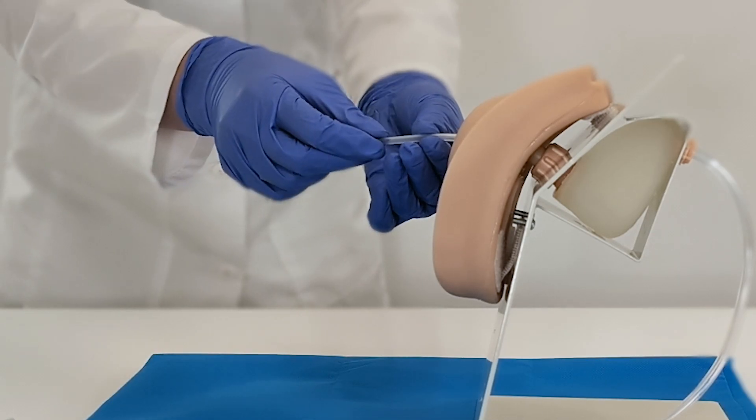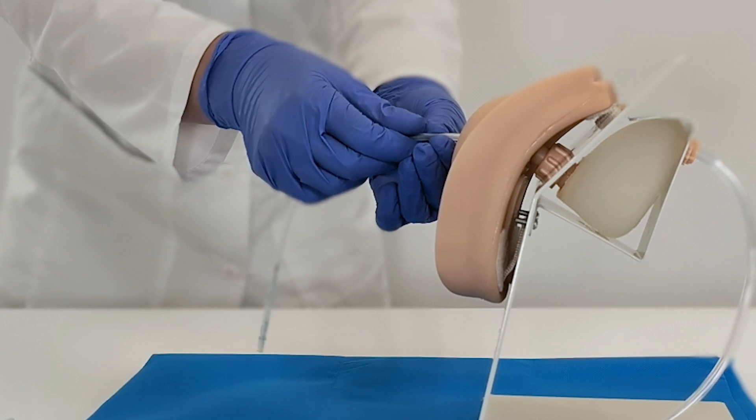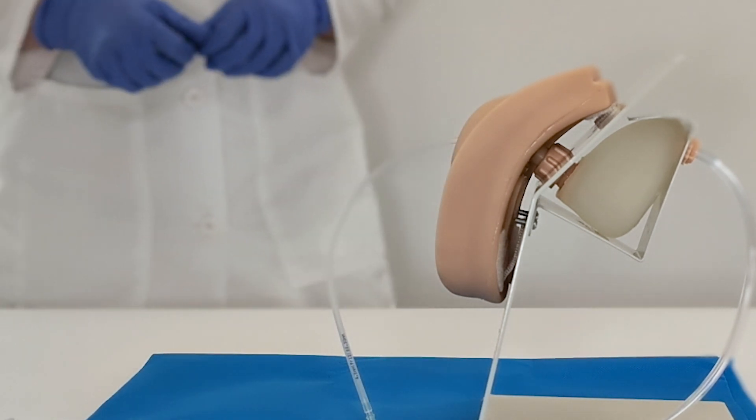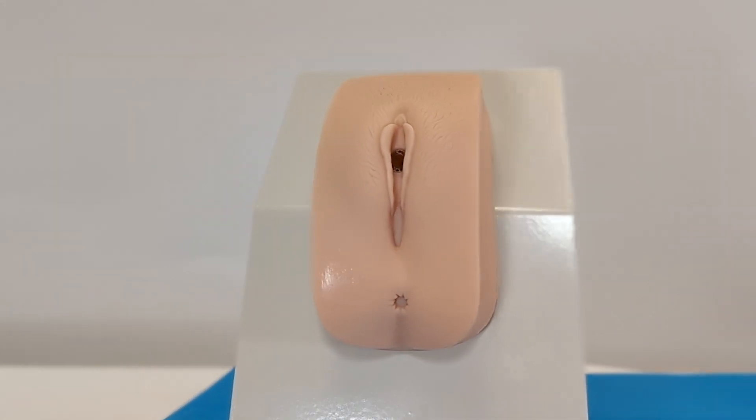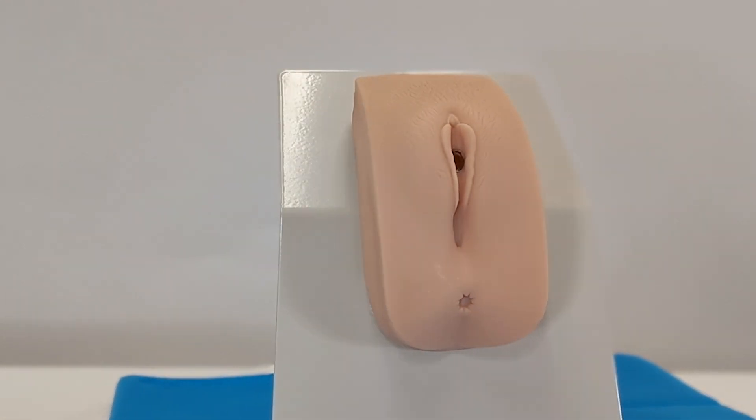The female model includes anatomical landmarks critical to understanding the correct orientation and positioning of the catheter, including the vagina, labia minora, labia majora, and clitoris.